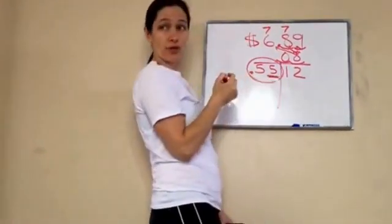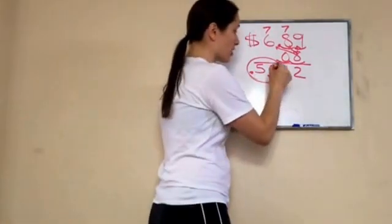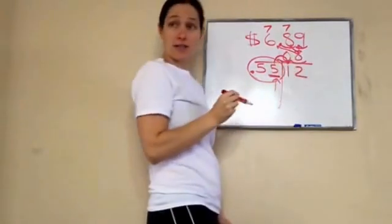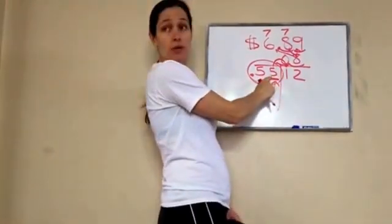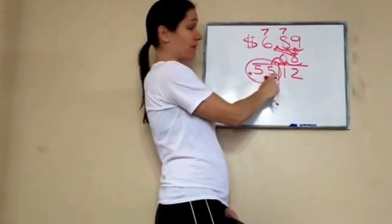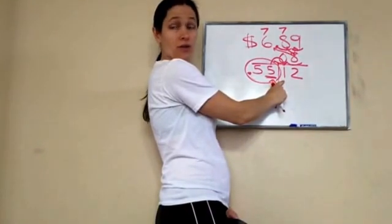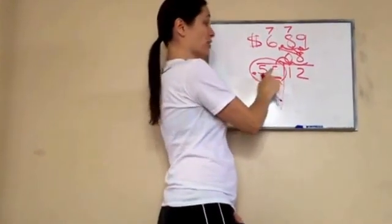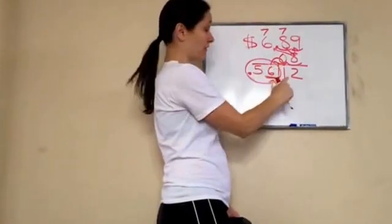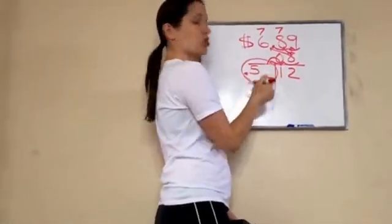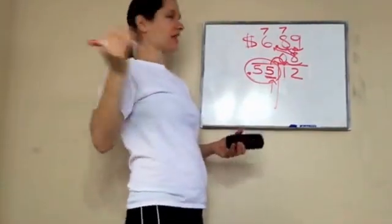You're gonna look at the hundredths spot and look to the right of that. If it is five or higher, this rounds up. If this number is five or higher, 55 would go to 56. If it's four or lower, it stays.